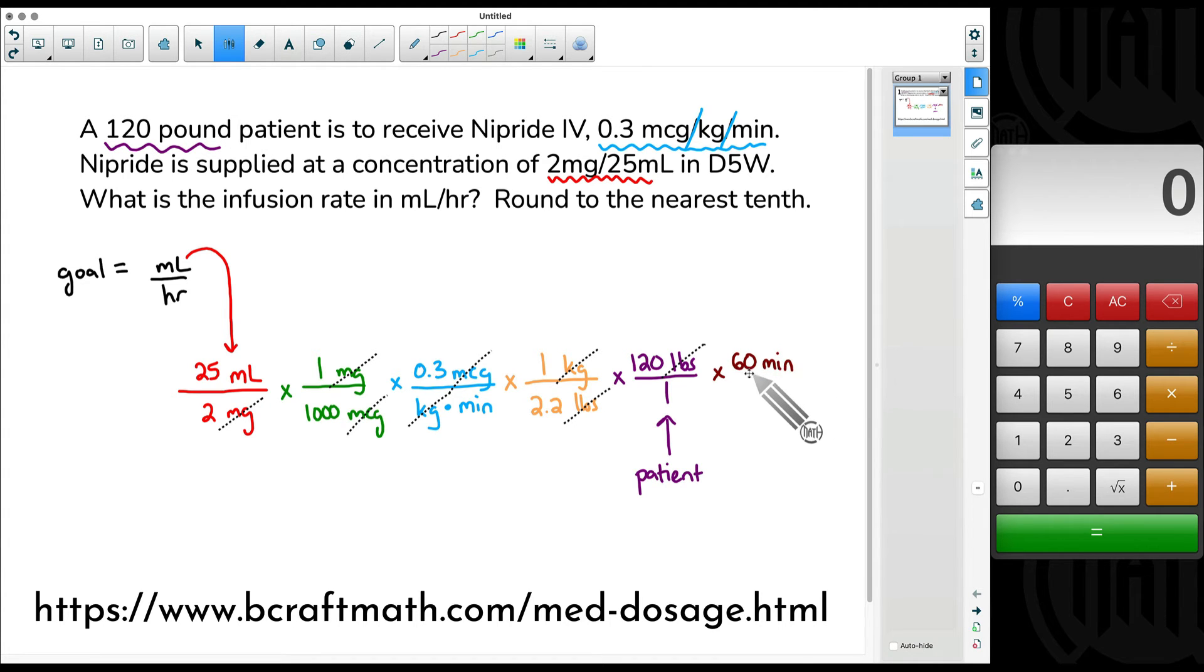60 minutes is equal to 1 hour. Yes, this is a conversion. 60 minutes is equal to 1 hour, just like 1 kilogram is 2.2 pounds, just like 1000 micrograms is 1 milligram. These are conversions. Minutes at the bottom cancels out with minutes at the top. I never said they had to be right beside each other. I said you had to have a word at the bottom to cancel out with the word at the top.